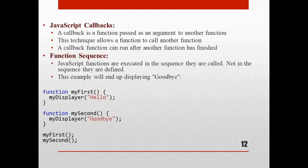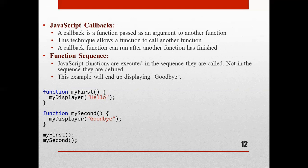First, let's see what JavaScript callbacks are. A callback is a function passed as an argument to another function. This technique allows a function to call another function. A callback function can run after another function has finished.